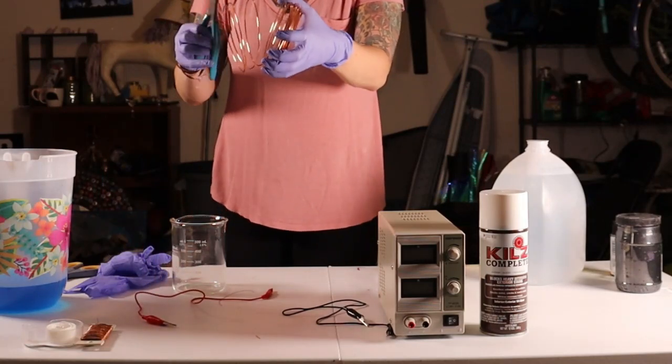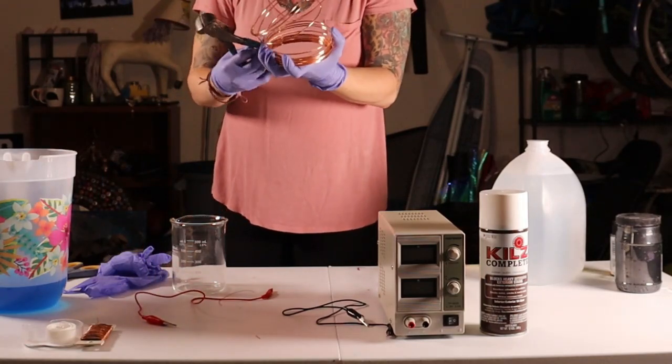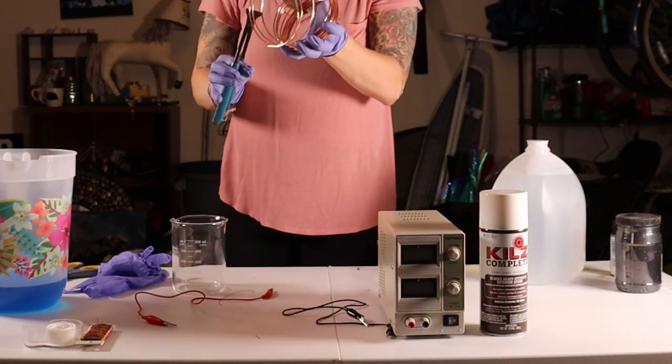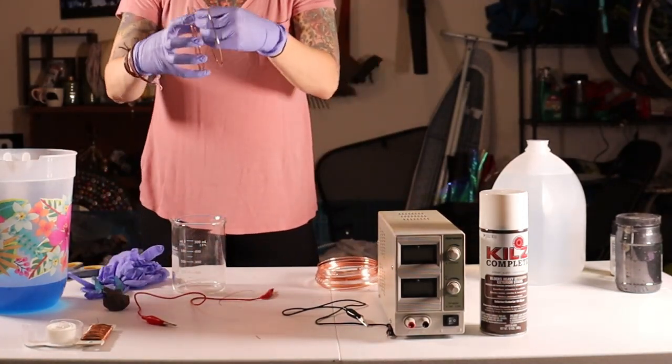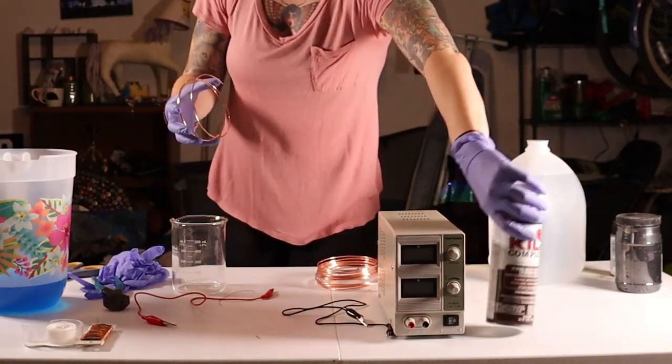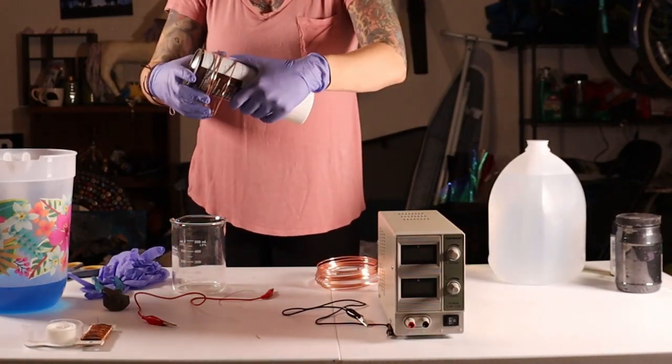And then one thing I like to do is take a cylinder, like here I have this Kills, and so what I do is I wrap the wire around it just to make it a little bit smaller and it'll fit into your beaker a little bit easier.